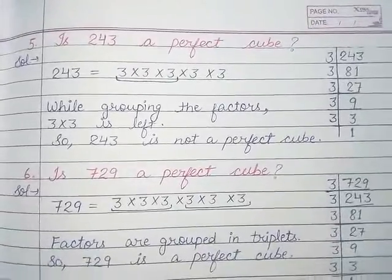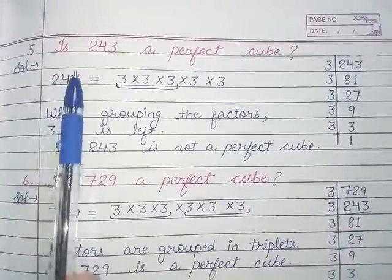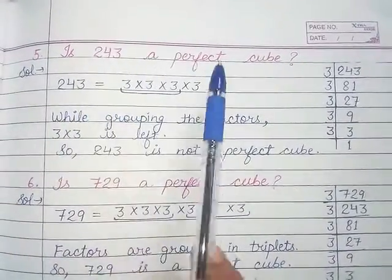And the next fifth question is, is 243 a perfect cube?